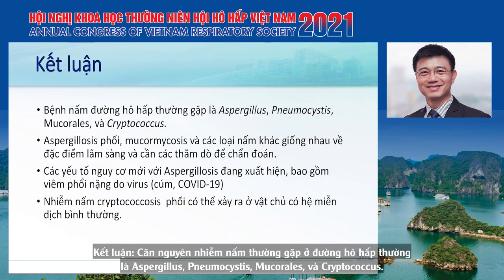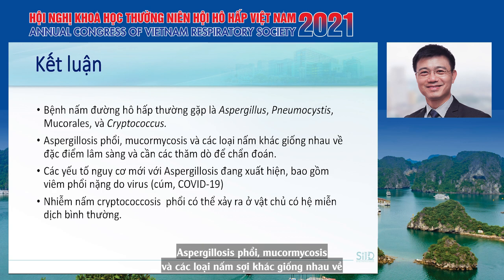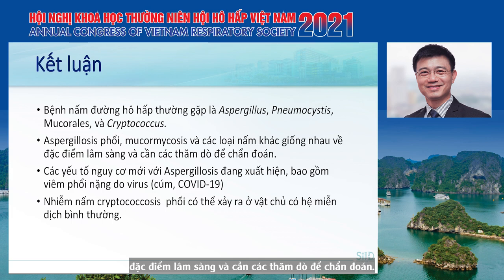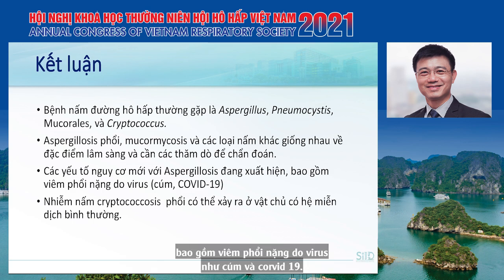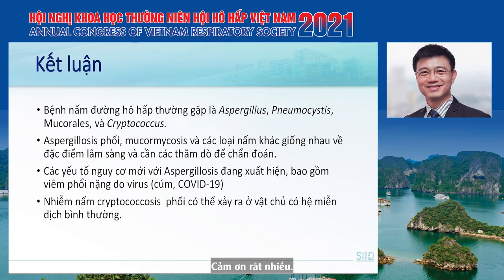In conclusion, common fungal pathogens of the respiratory tract include Aspergillus, Pneumocystis, Mucorales, and Cryptococcus. Pulmonary aspergillosis, mucormycosis, and other mold infections share similar clinical features and require similar diagnostic procedures. Novel risk factors for aspergillosis are emerging, including severe viral pneumonia such as influenza and COVID-19. Pulmonary cryptococcosis may occur in a relatively immunocompetent host. Thank you very much.